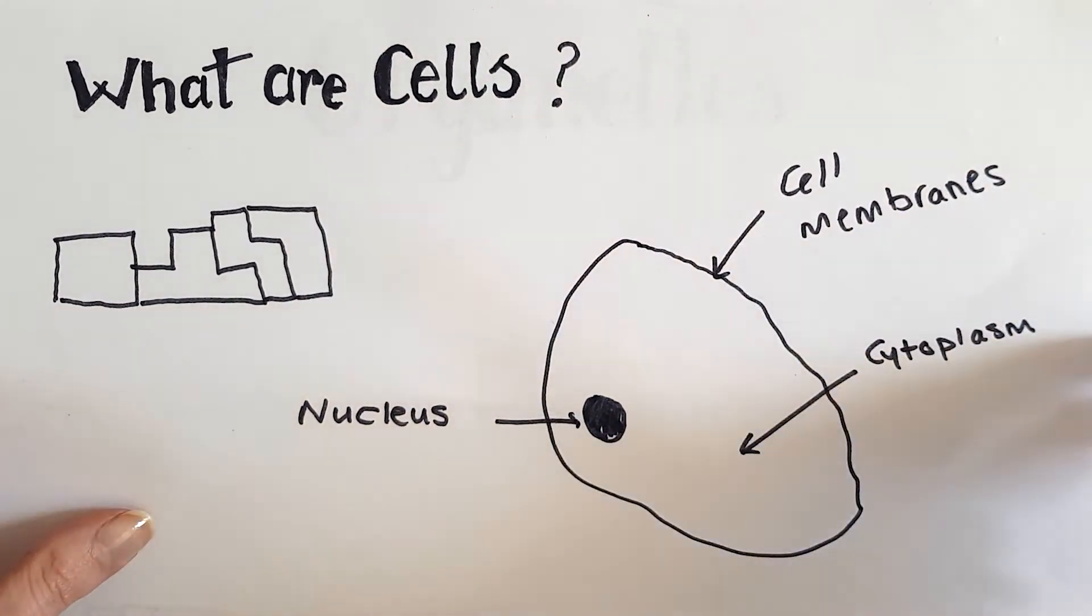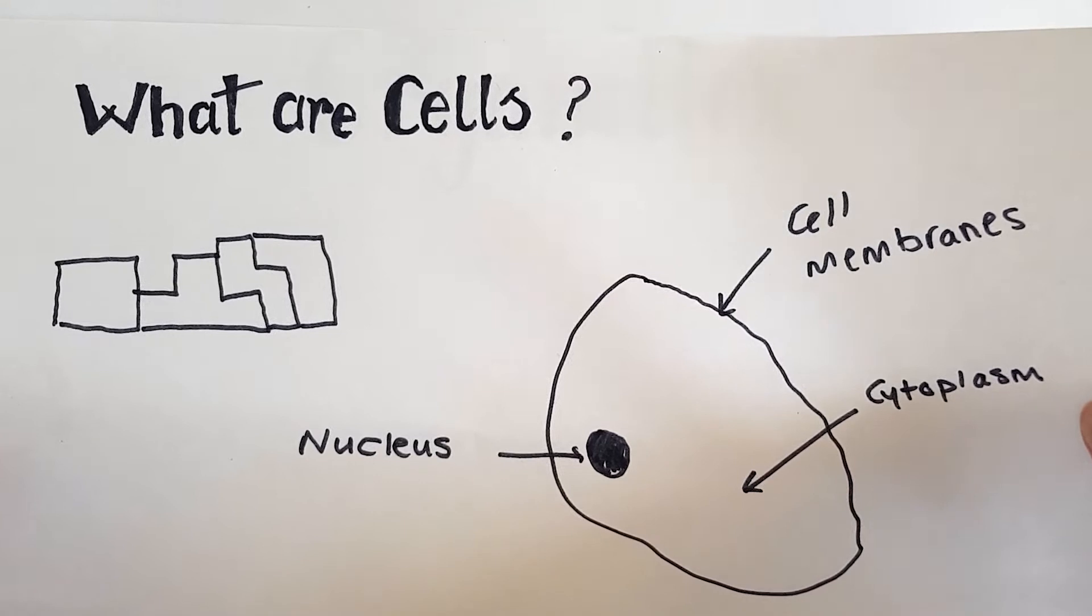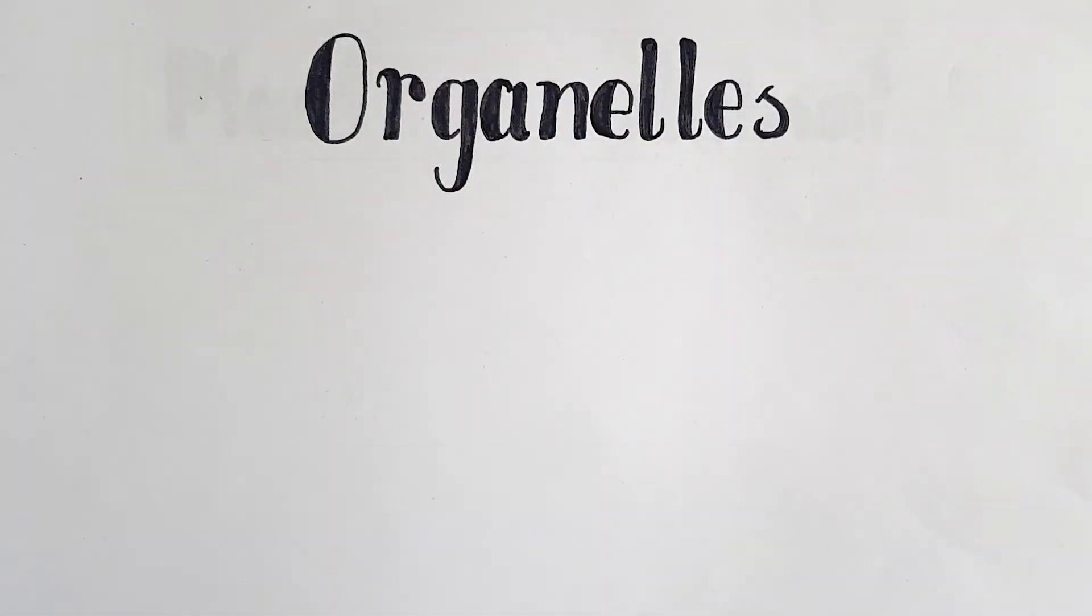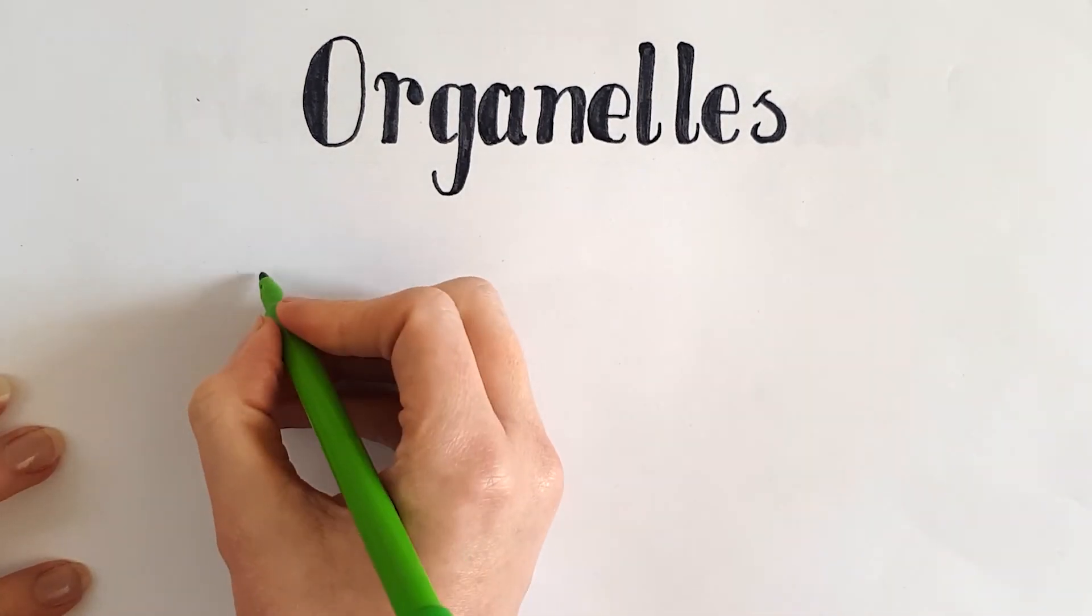All these little structures are called organelles. Organelles are specialised to perform certain jobs inside and within a cell to help them all function properly. They all have different job roles they are responsible for, and we're going to focus on two at the moment.